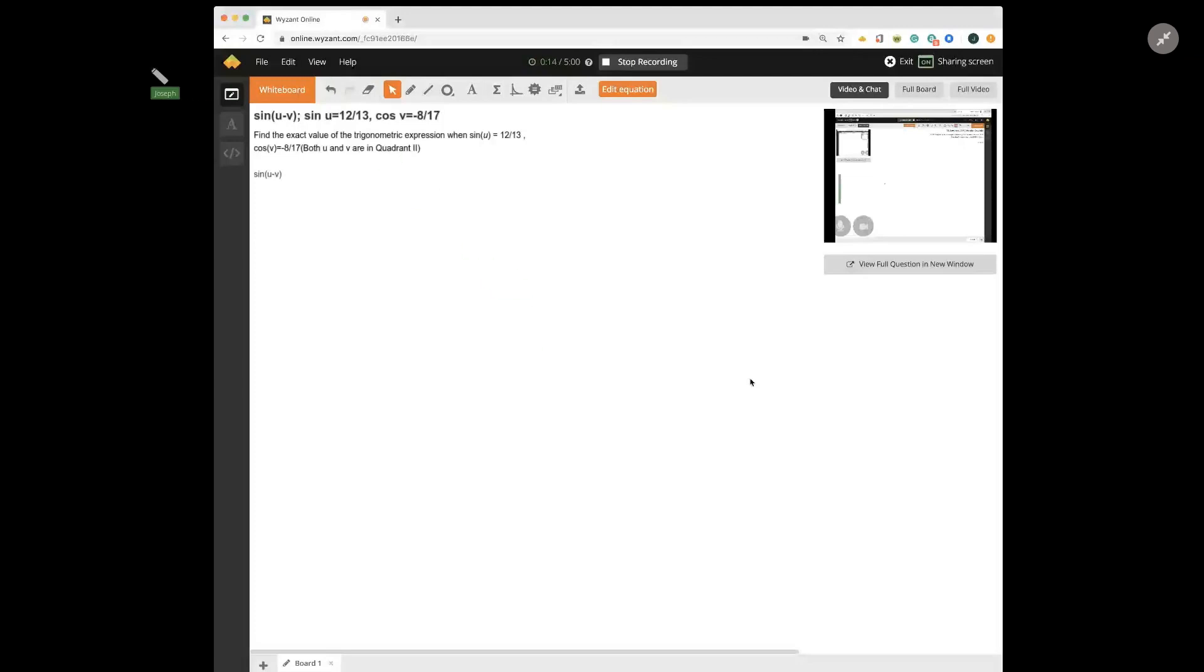So in this problem they ask us to find the sine of u minus v. They don't tell us what u minus v is. What they do tell us is that the sine of u is 12 over 13, and the cosine of v is negative 8 over 17, and another essential piece of information is that both of these angles are in quadrant 2.